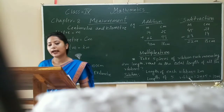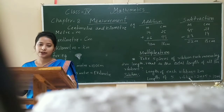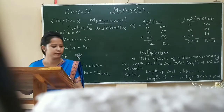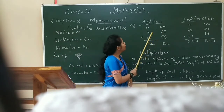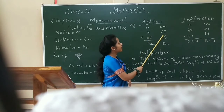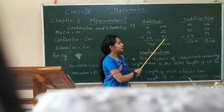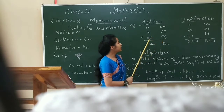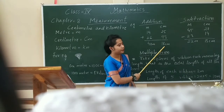We can add, subtract, and multiply meters and centimeters. Let us see a few examples. Addition: 14 meters 25 centimeters plus 26 meters 93 centimeters. Together we will get 40 meters 18 centimeters.